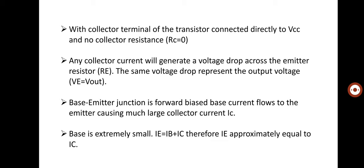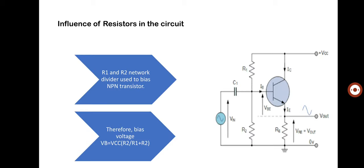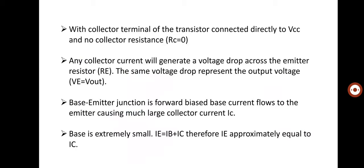The base-emitter junction is forward biased, and base current flows to the emitter causing a much larger collector current IC. We can see that the base-emitter junction is in forward bias, and due to this forward bias, the IC current will be much greater compared to both terminals. The base current is extremely small, so IC equals IB plus IC, therefore IE is approximately equal to IC.